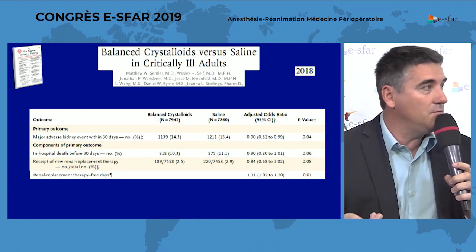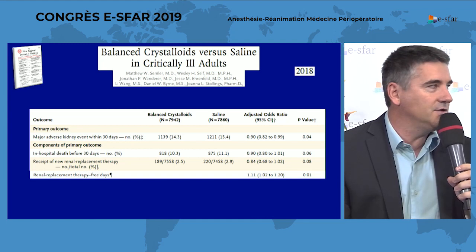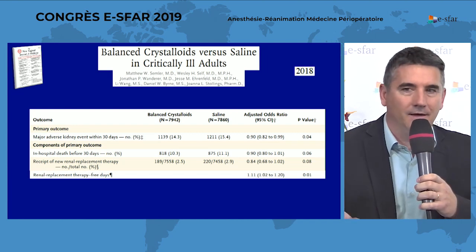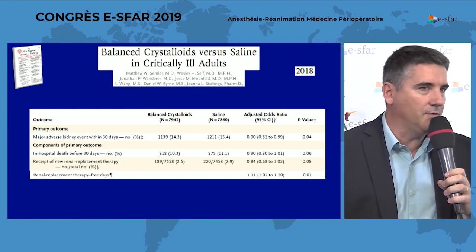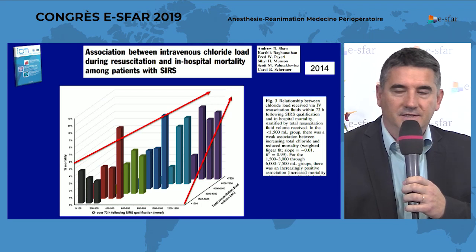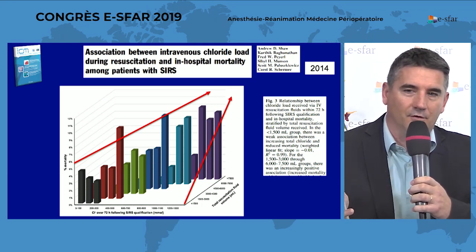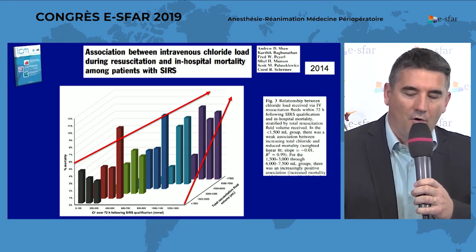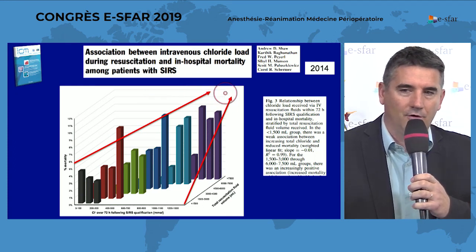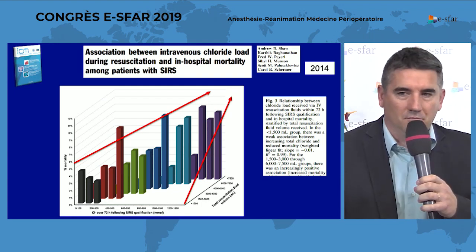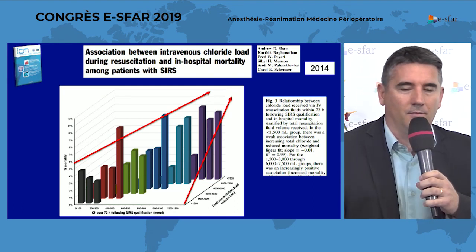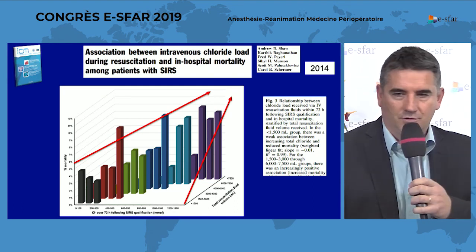The same study in the emergency room with also 15,000 patients showed the same results — 30,000 patients total where balanced solutions were clearly better than saline for septic and acute patients. This is really representative of what we think now: the more fluid you give, the higher the mortality; the more chloride you give, the higher the mortality. Probably the answer to the question is both — volume overload and chloride are both probably toxic for the patient.